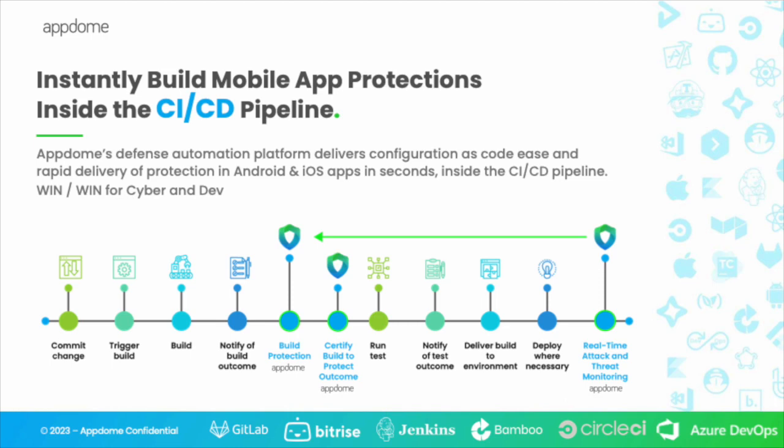After a developer triggers a build and gets notified of the build outcome, that build is then protected with the company-approved security model, and AppDome provides a notification of the protections using the Certified Secure certificate. From there, the ops team runs the final tests, deploys the app to production, and then AppDome's ThreatScope Mobile XDR collects real-time attack and threat intelligence, providing a feedback loop to the dev and cyber teams — allowing the cyber team to create a new version of the security model by the time the dev team triggers a new build.